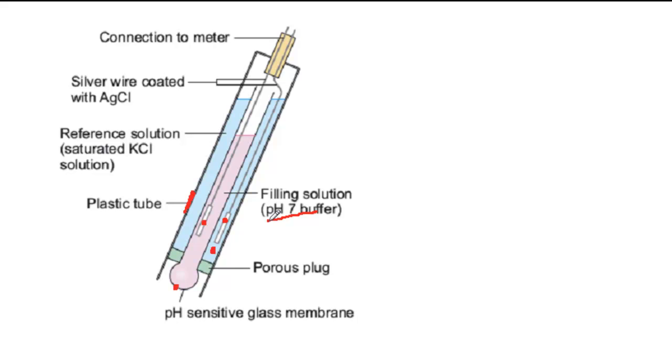The size of this potential difference depends on the difference in the concentration of aqueous hydrogen ions inside and outside the glass membrane. Since the pH inside is fixed, the potential difference depends on the pH of the solution outside.